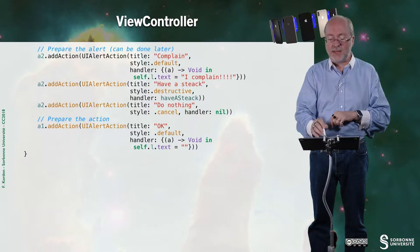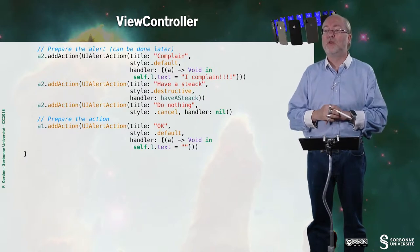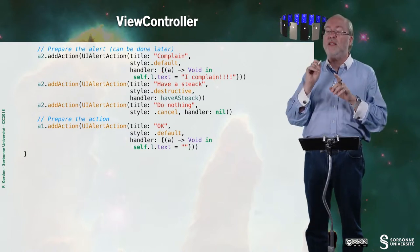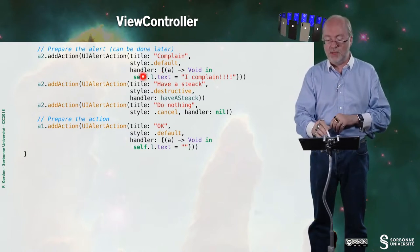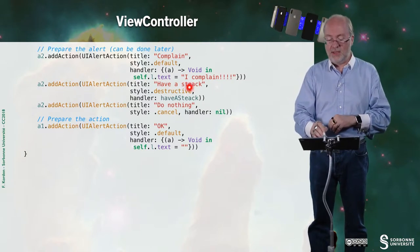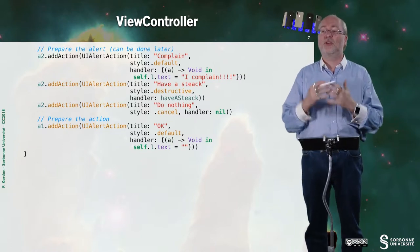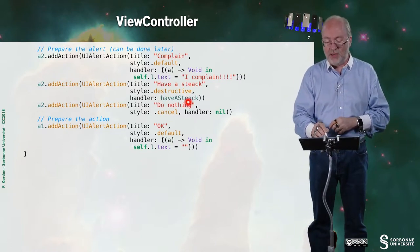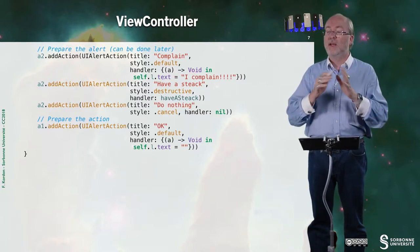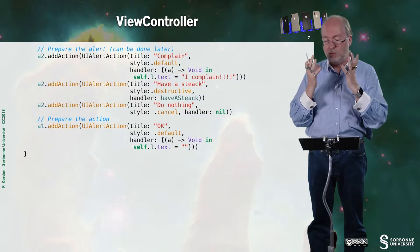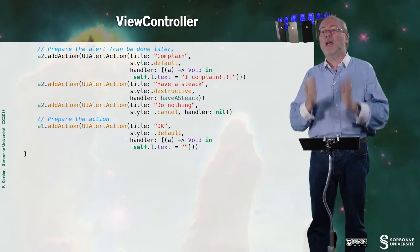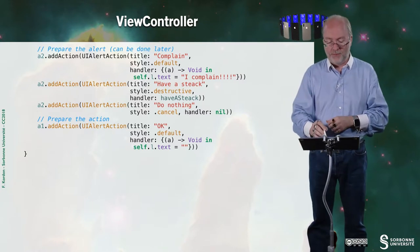Here you see that I create a first action, complain, with handler. So if I select this element, I will set to the label L "I complain". If I have a stack, this is the second action. I will call the method haveAStack. And this method should respect this profile - that is, it has one parameter, which is a UIAlertAction, and it returns nothing.